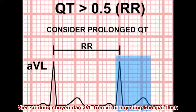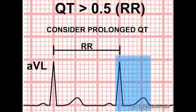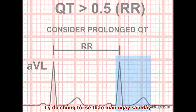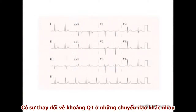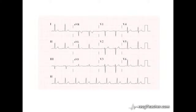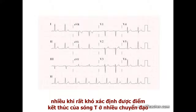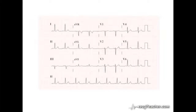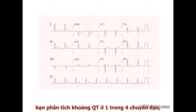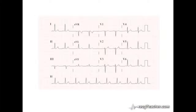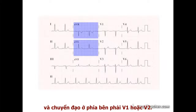The use of AVL in this example is quite deliberate. There is variation in the length of the QT interval between different leads, and for technical reasons it can be difficult to identify the end of the T wave in many leads. It is recommended that you analyse the QT interval in one of four leads: AVL, AVR, or one of the right-sided chest leads, V1 or V2.